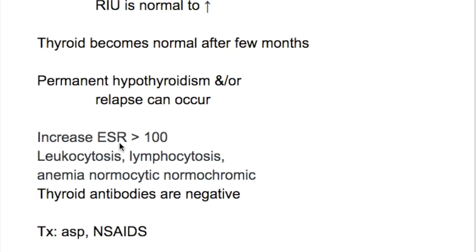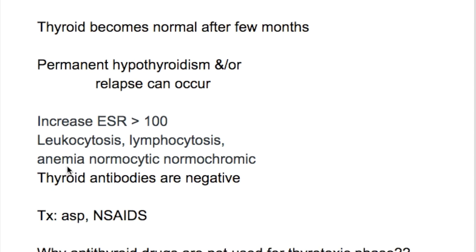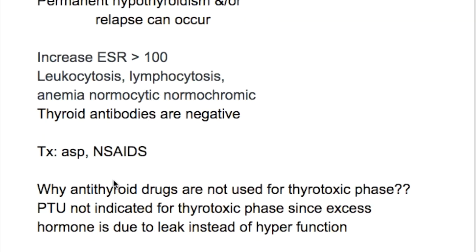The laboratory features include an increased ESR of more than 100, leucocytosis, lymphocytosis, normocytic normochromic anemia, and thyroid antibodies are negative.